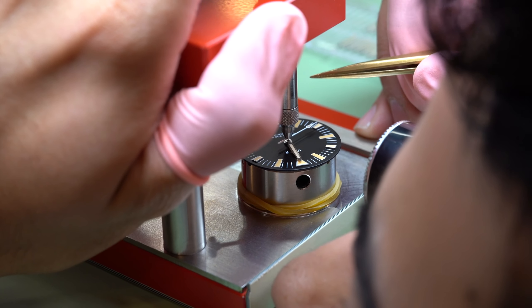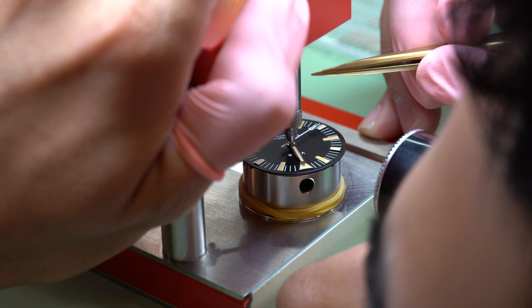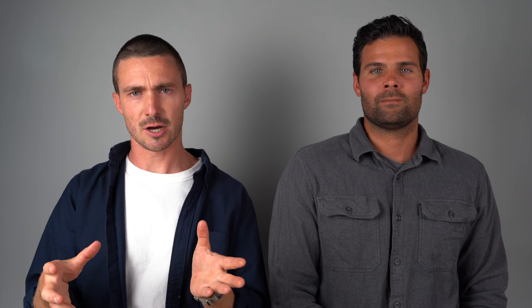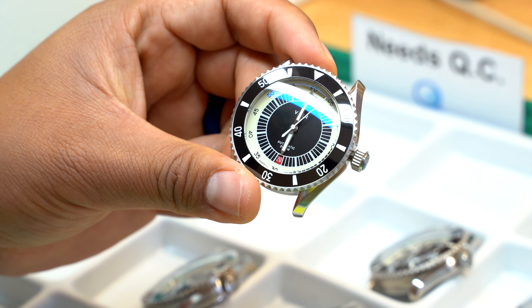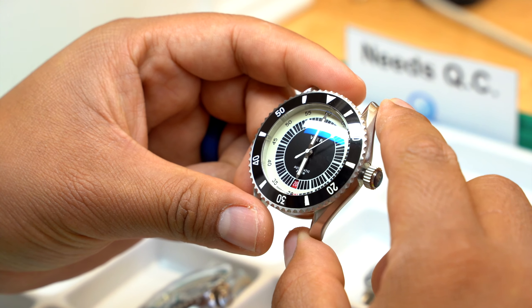So breaking down the video, Ryan's gonna kick things off by speaking about the pre-assembly process, the kitting, the organization that goes into it. I'm gonna take the middle of the video talking about the dial and the hand installation, and then Ryan's gonna close things out by running through the casing, the movement regulation, and the water resistance testing. So without further ado, let's kick things off.